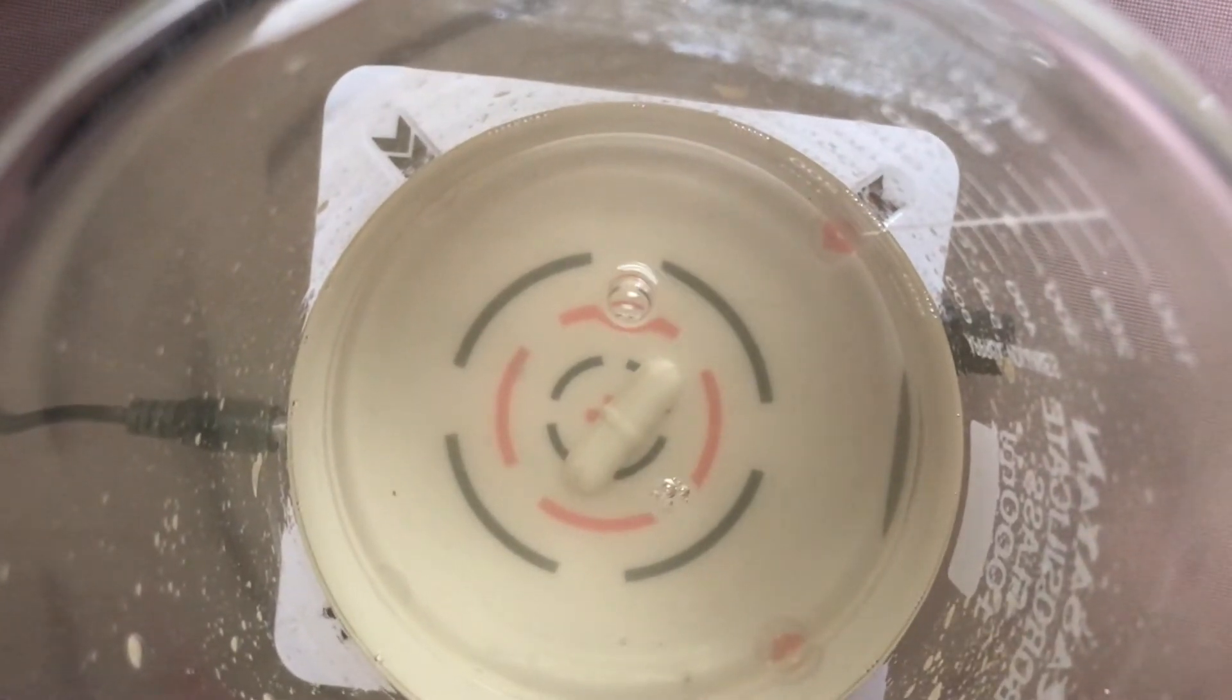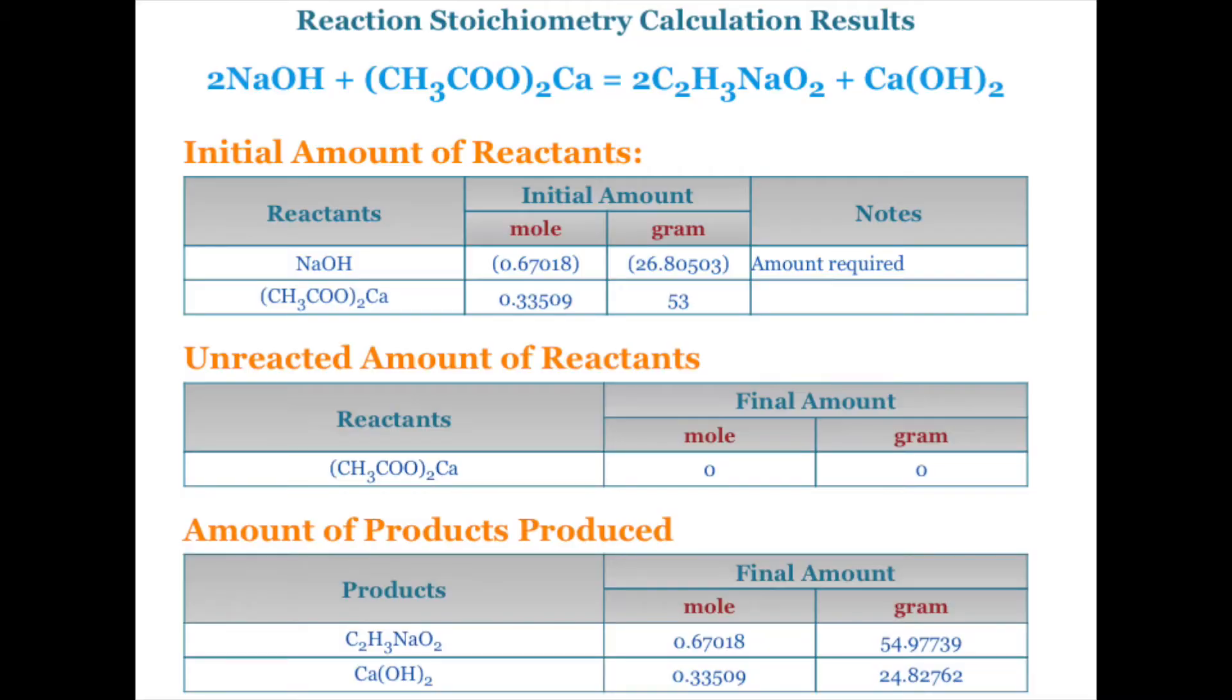You can now see that there is no undissolved reactant. As you can see, I started with 53 grams of calcium acetate and I found this website that does the stoichiometry calculation results.